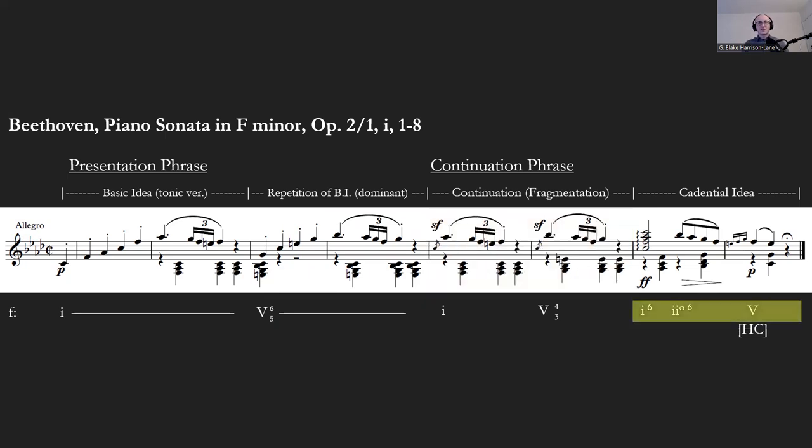We end with our cadence, and notice that the melodic material we're using is not derivative—it's not coming from our basic idea, it's just conventional melodic ideas. So again: basic idea, repetition of basic idea, continuation using the basic idea but messing with it a little bit, and then our cadential idea—cadence at the end. In this case, a half cadence.